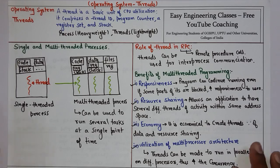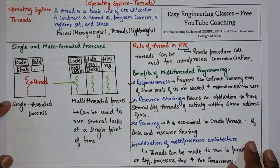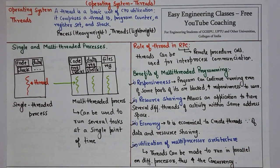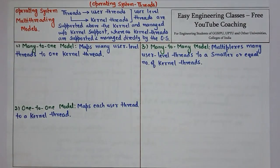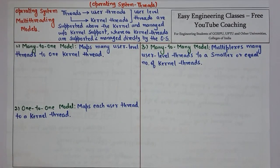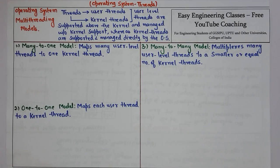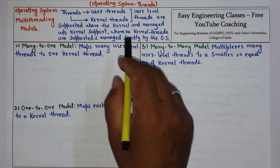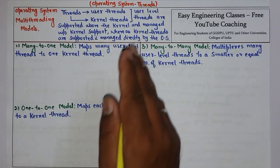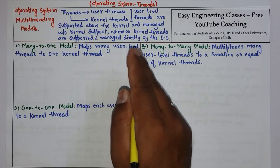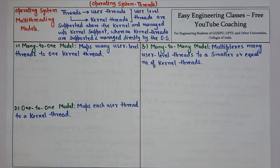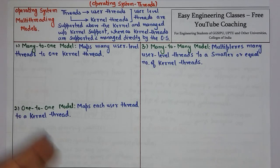Now let's move to the multi-threading models. Threads can be of two types: user thread and kernel thread. User level threads are supported above the kernel and managed without kernel support, whereas kernel threads are supported and managed directly by the OS. There are different models for the mapping of user level threads to kernel threads.